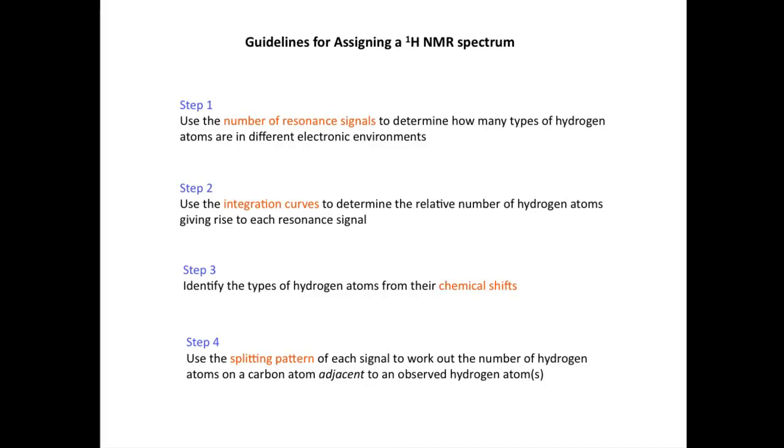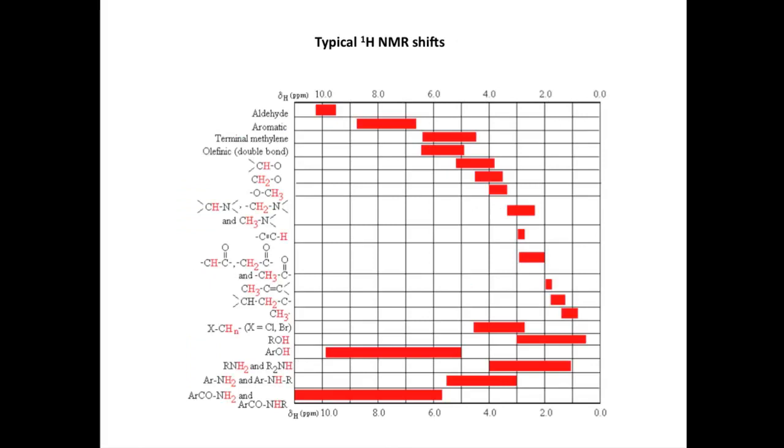Before we do that, we'll just look at chemical shifts. And this table here shows the range of chemical shifts of a variety of hydrogen atoms, starting at the very top, the highest chemical shift value, typically for an aldehyde. And we're going to go into an aromatic ring to alkenes.